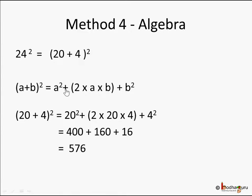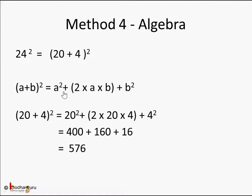We use the formula: (a + b) squared equals a squared plus 2ab plus b squared — always put the brackets to avoid mistakes. Here a is 20 and b is 4, so it becomes 20 squared plus (2 times 20 times 4) plus 4 squared. That is 400 plus 160 plus 16, which equals 576. So 24 squared is 576.